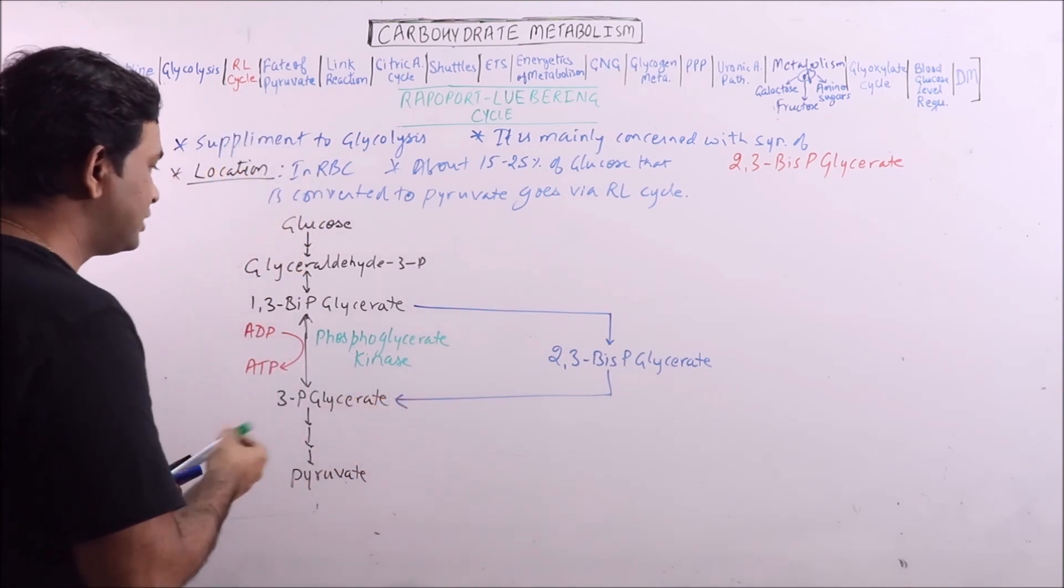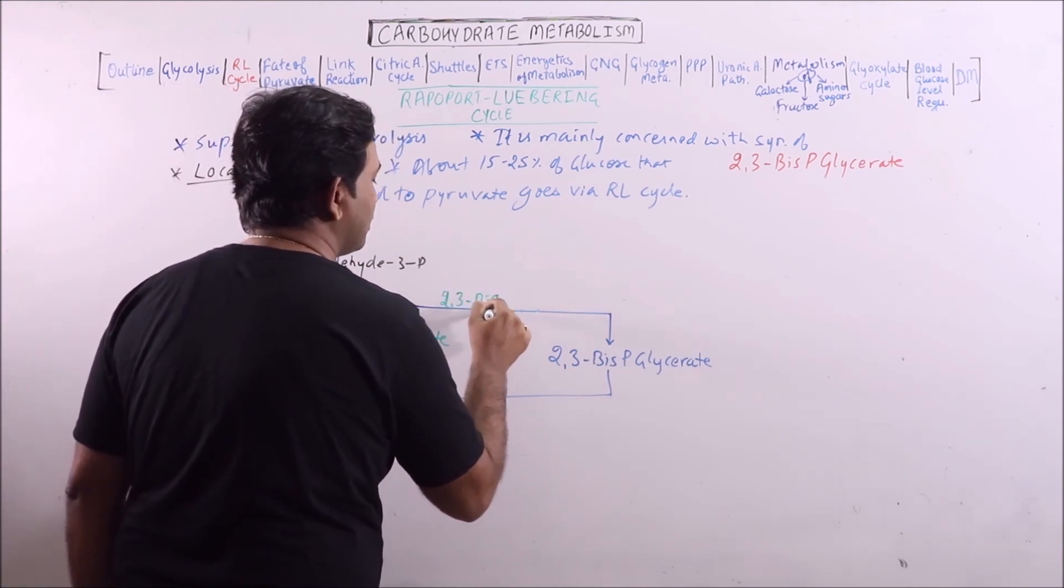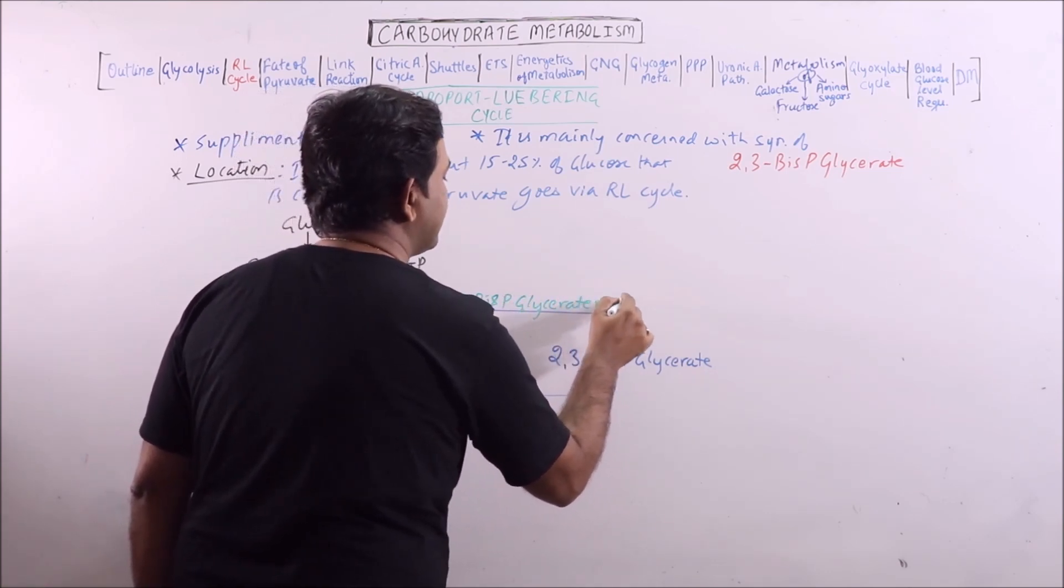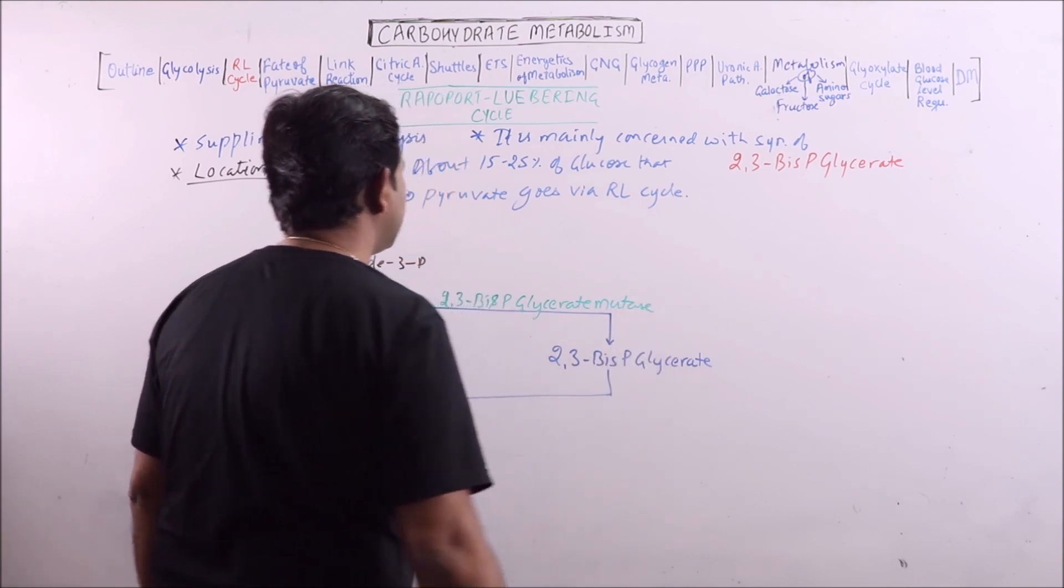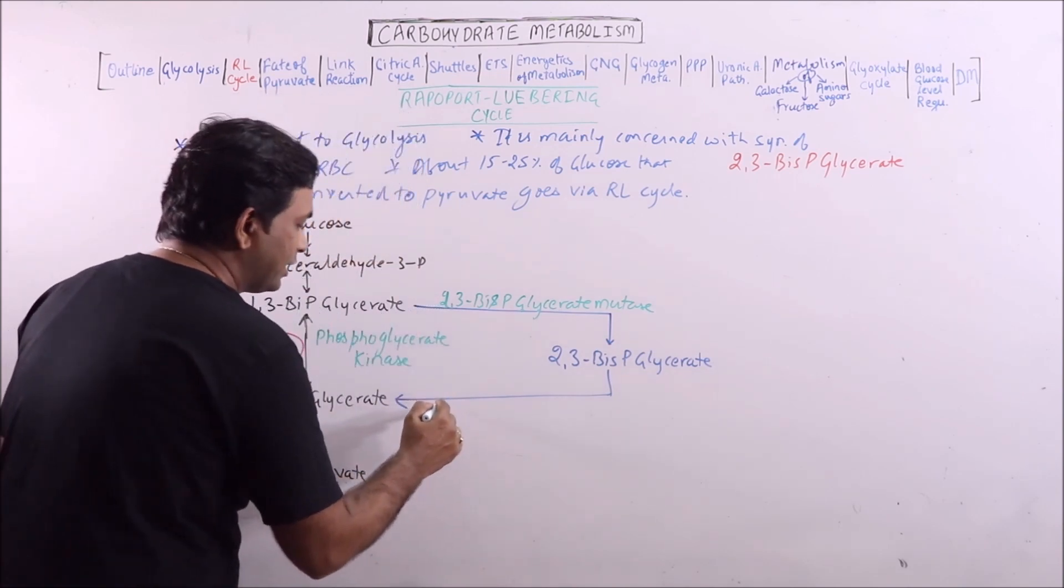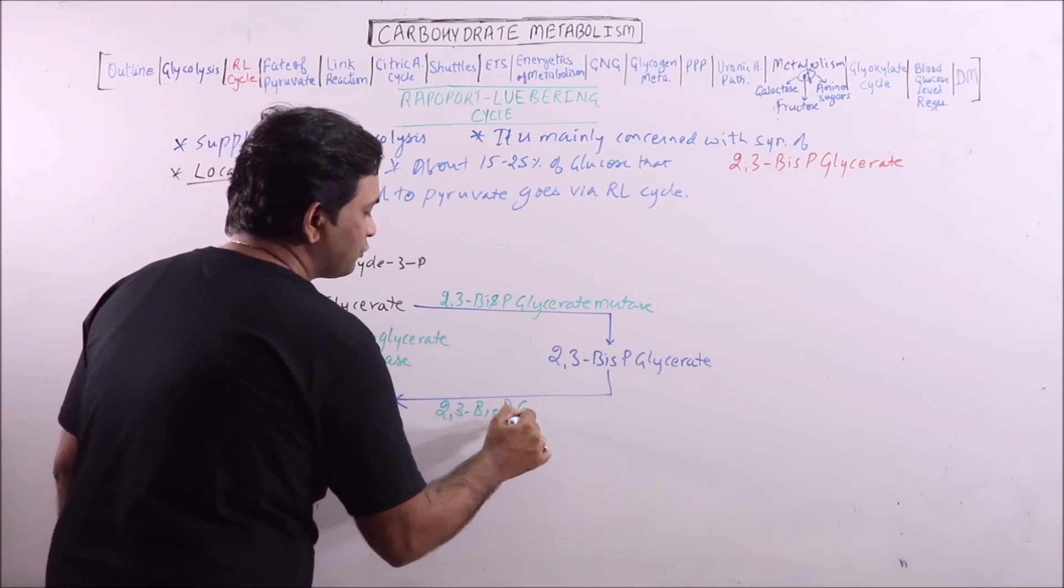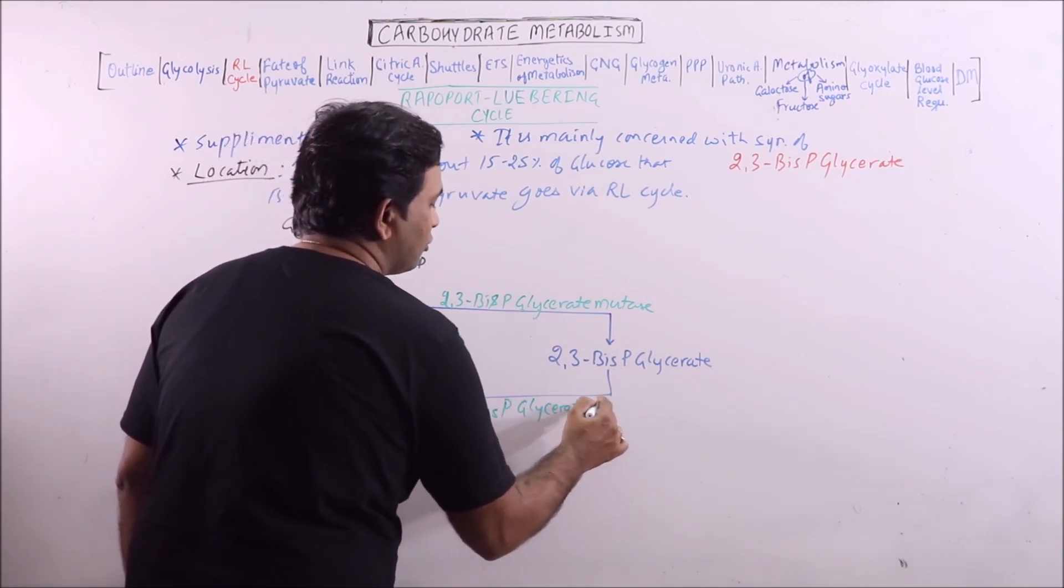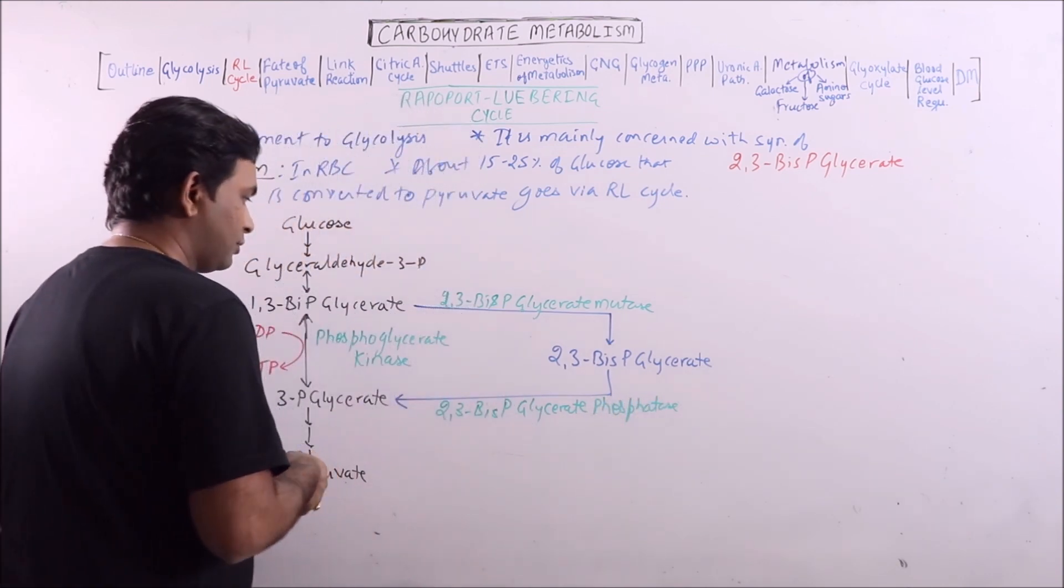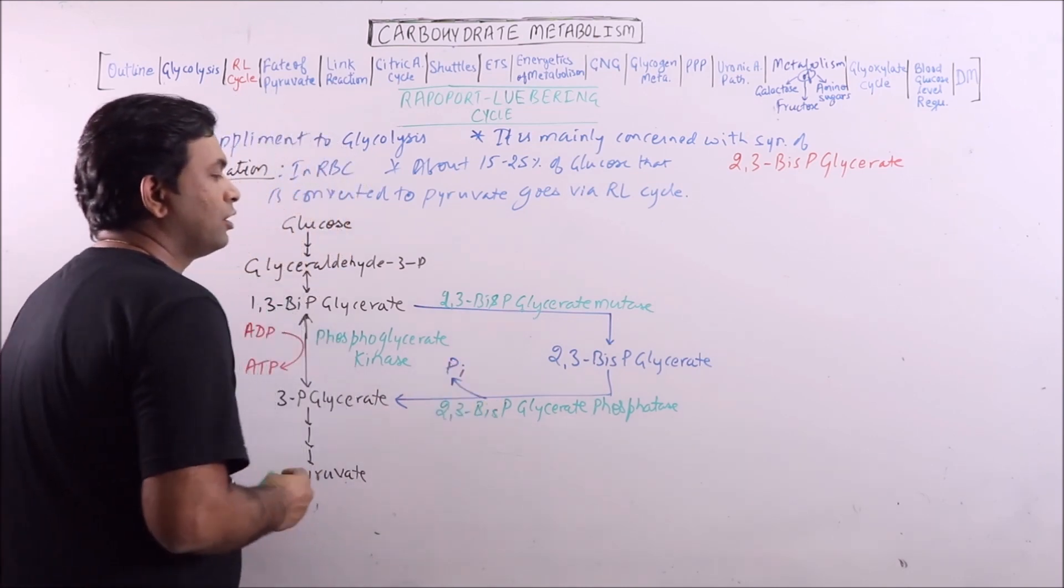Here the enzyme involved is 2,3-bis-phosphoglycerate mutase. Now, 2,3-bis-phosphoglycerate is acted upon by 2,3-bis-phosphoglycerate phosphatase. The release of inorganic phosphate.